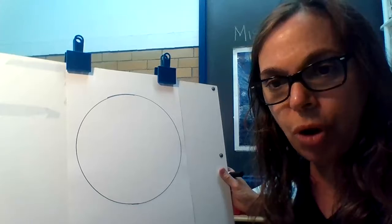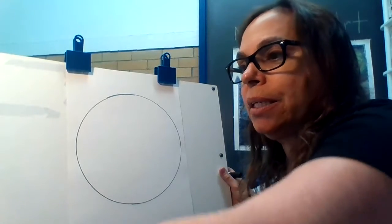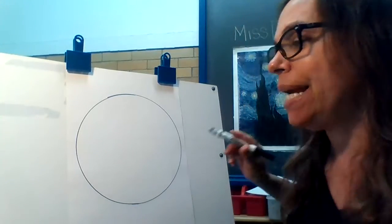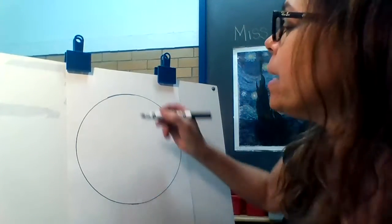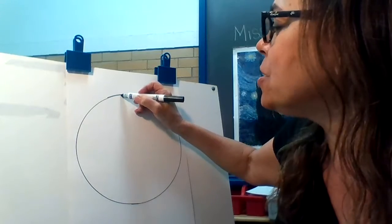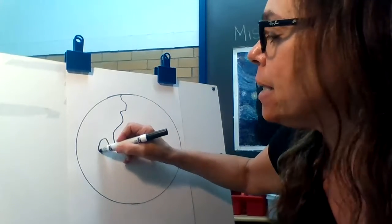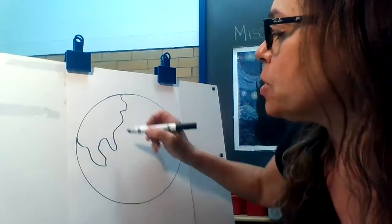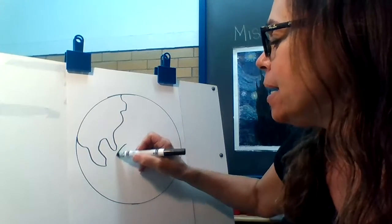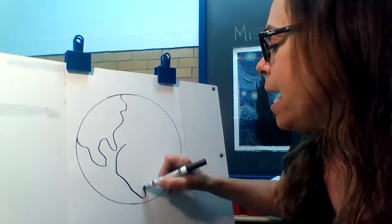Now I need to draw the land, the continents. First I'm going to draw North America. It's just squiggle lines. It doesn't matter if it doesn't look exactly like the map. Just draw some squiggle lines for North America. Then we have South America.